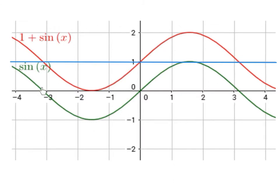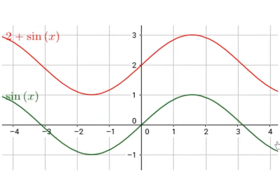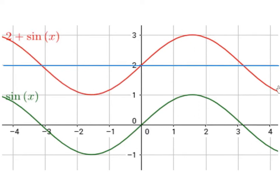The midway line for the green curve, which is just the original sine of x graph, is just the x-axis — technically y equals 0. The green curve is the general graph of y equals sine of x, and the red curve is y equals 2 plus sine of x, so it's been shifted 2 units upwards. The midway line is now y equals 2.